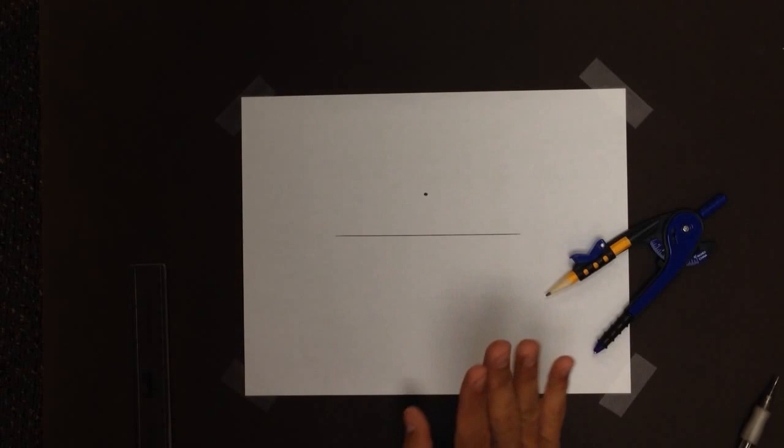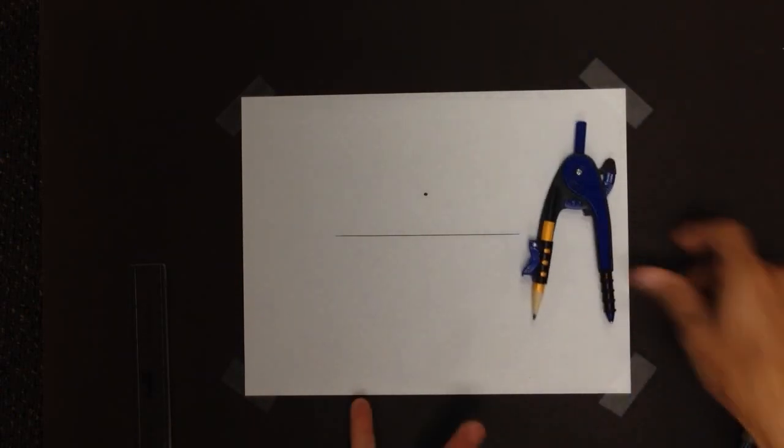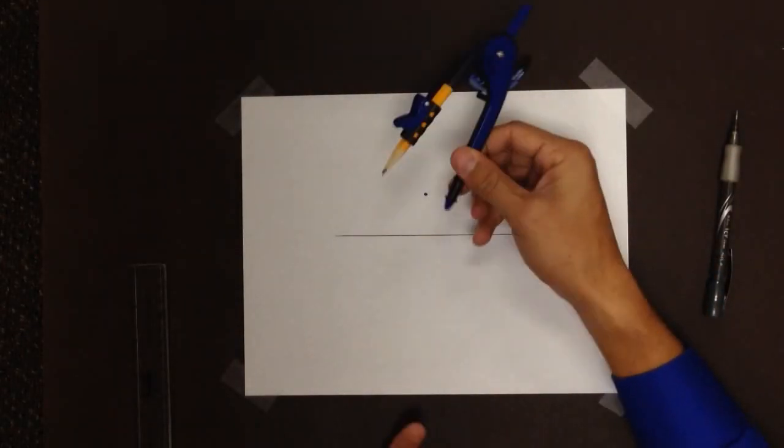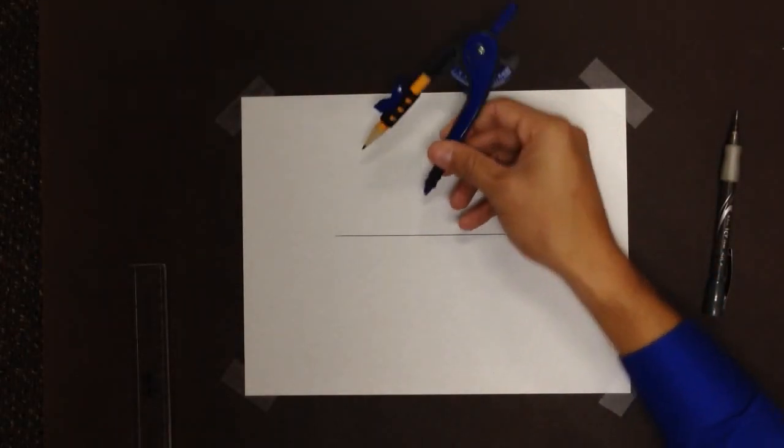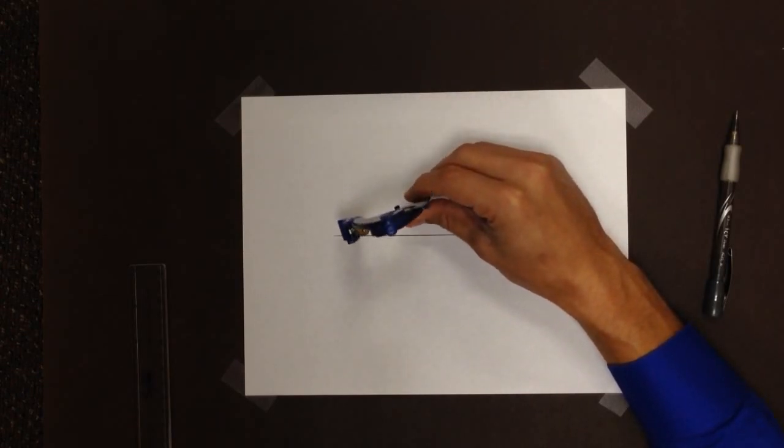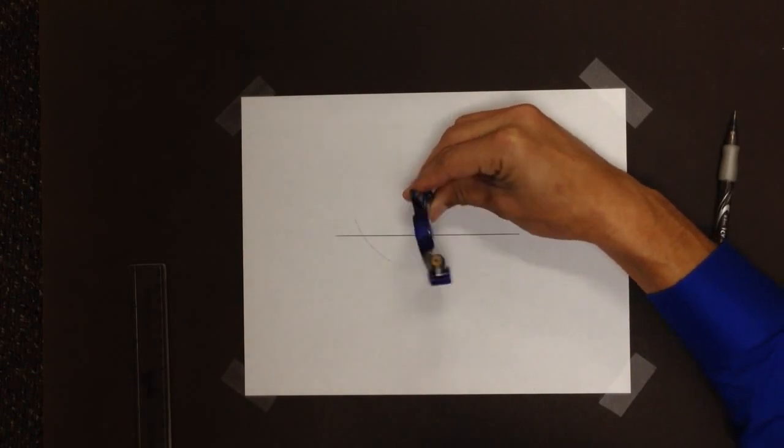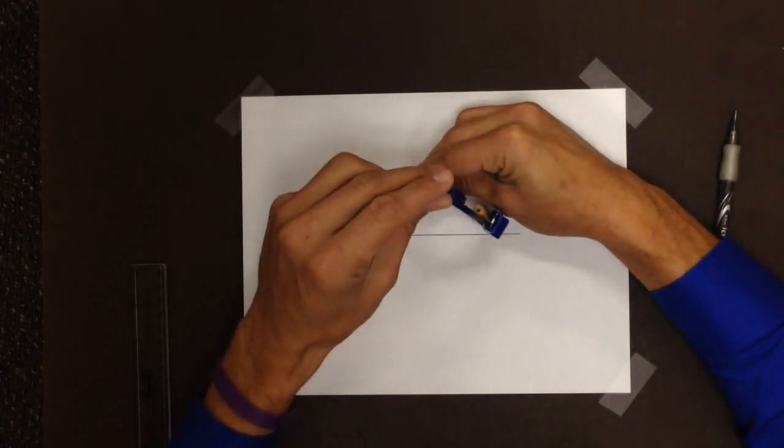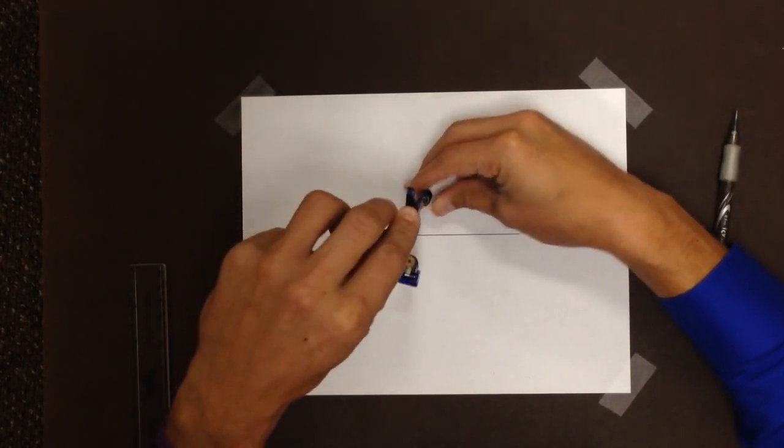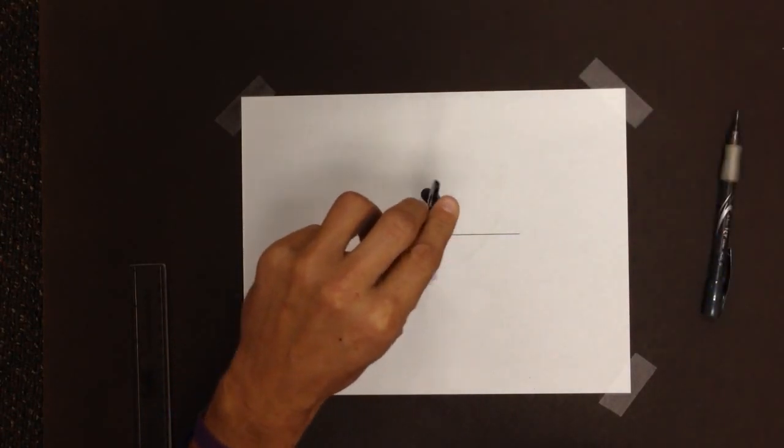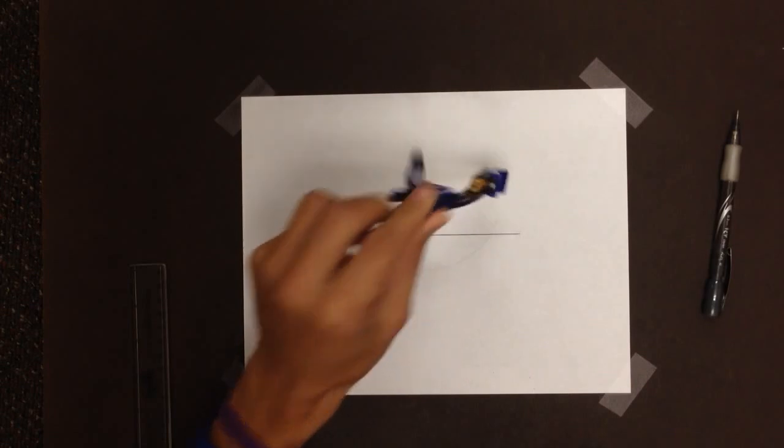Easiest thing to do is take your compass as per standard, extend it to a length, make sure it's longer than the line, just make like this. And when you put your non-pencil end on the point, you draw an arc that intersects your line twice, like so.